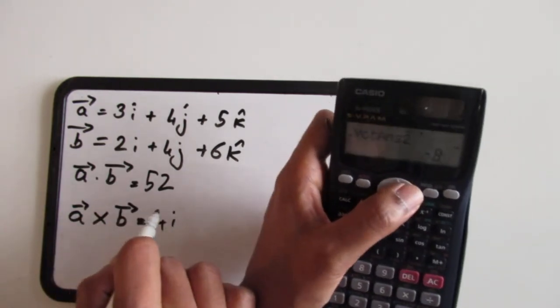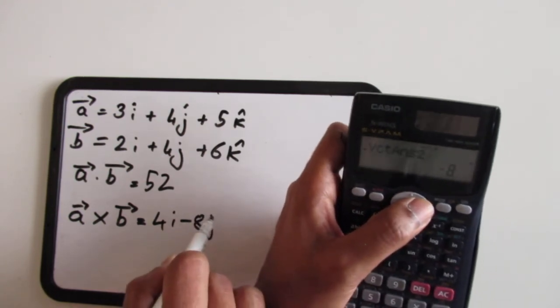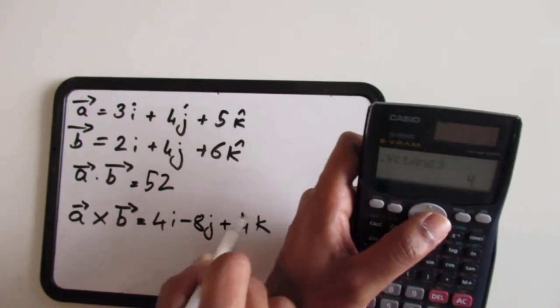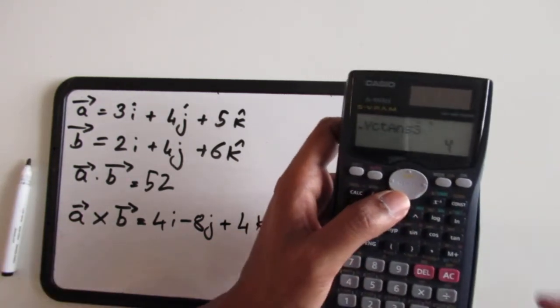4i minus 8j plus 4k. So that is vector A times vector B.